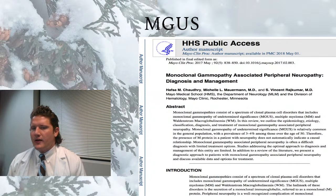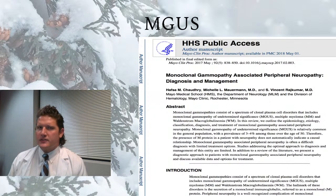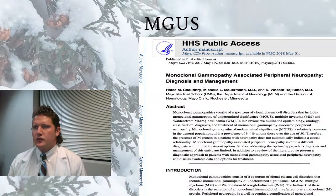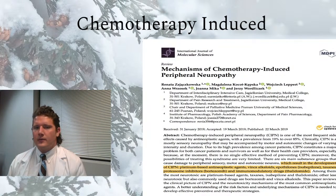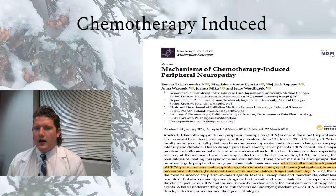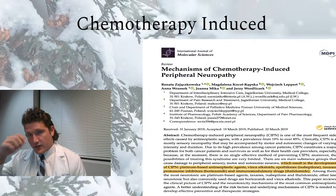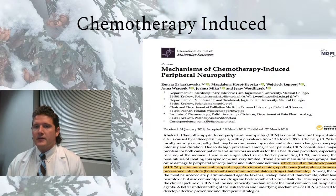Keep in mind that with MGUS there is about a one percent per year transition potentially into a malignant condition like multiple myeloma or the others mentioned. Chemotherapy-induced peripheral neuropathy, often referred to as CIPN, is a major issue for those who work with peripheral neuropathy cases. It commonly follows certain chemotherapy medications.